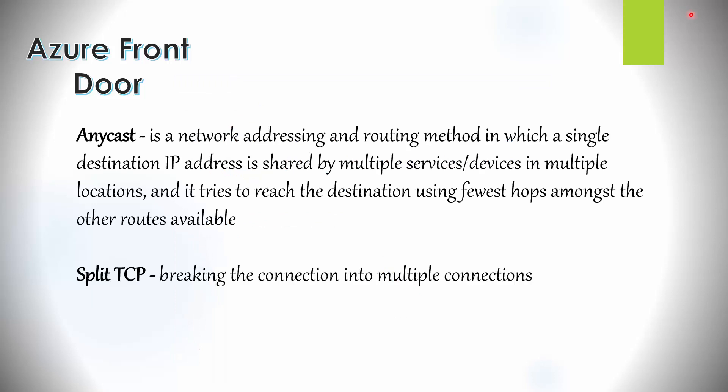Azure Front Door is not tied to a region as it's a global service, which is a key part to understanding how routing works. Front Door makes a service available using the anycast protocol, meaning the service or IP address is advertised across all edge locations and you will be routed to the closest location based on where you are. Azure Front Door also uses something called split TCP, which breaks connections into smaller pieces or multiple connections, reducing latency and providing better performance.